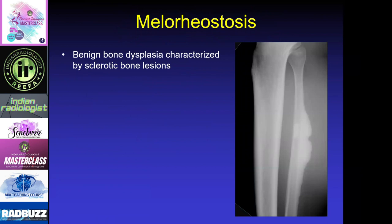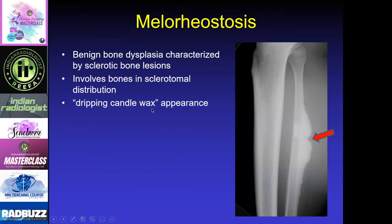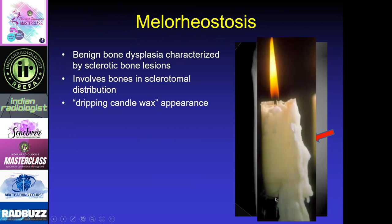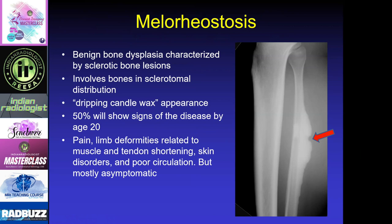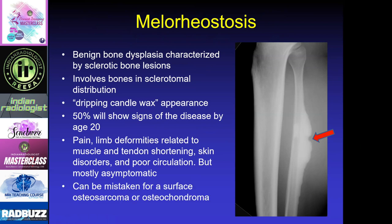Melorheostosis is a benign bone dysplasia where you get sclerotic bone lesions on the surface of the bone. It usually involves a sclerotome distribution, and they describe this as a dripping candle wax appearance along the bone. Fifty percent will show signs of the disease by age 20, and most patients are actually asymptomatic, but sometimes people can have limb pain, muscle or tendon shortening, as well as skin disorders and poor circulation.